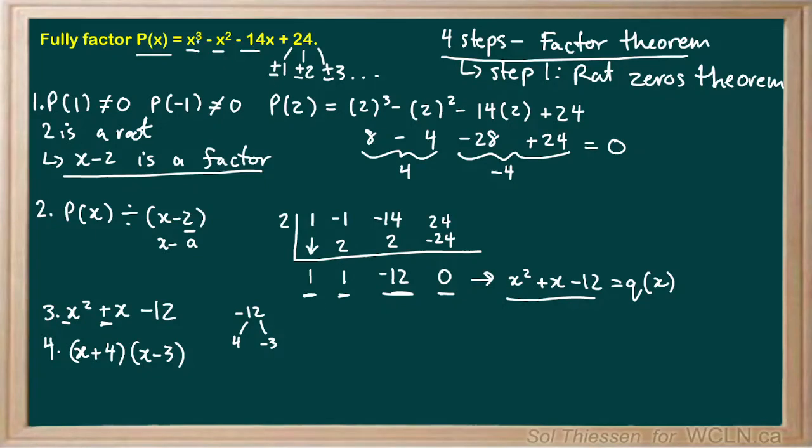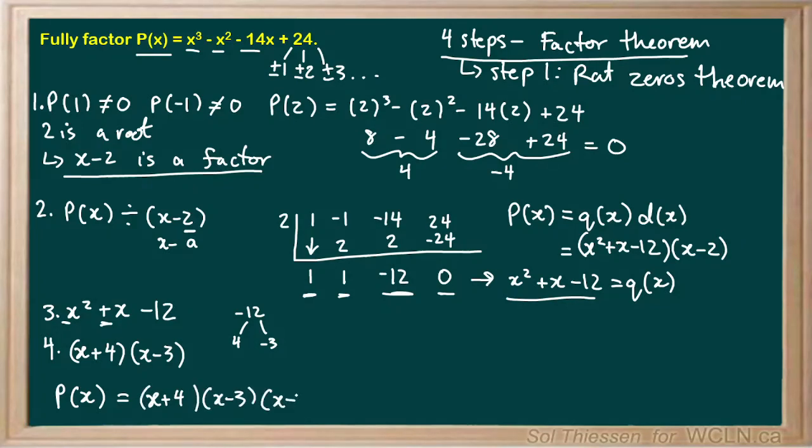So now our original polynomial, p of x, in step 2, we got it down to our quotient, q of x, times the divisor d of x, or explicitly, we can say that we got it down to x squared plus x minus 12 times the divisor x minus 2. And then we found that this expression, the quotient expression, factored down to x plus 4 times x minus 3. So our fully factored p of x looks like this. We have x plus 4 times x minus 3 times x minus 2. That's the answer to this problem.